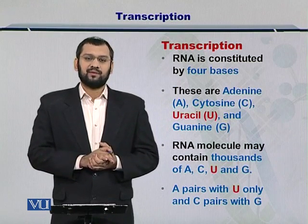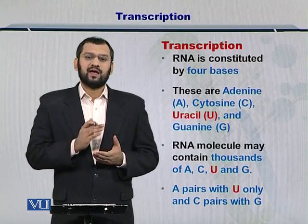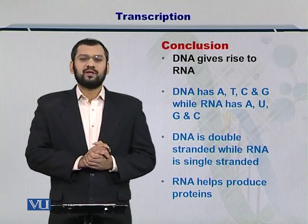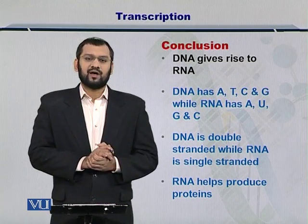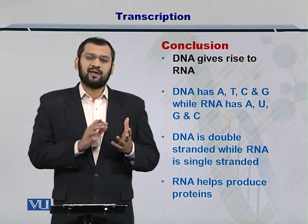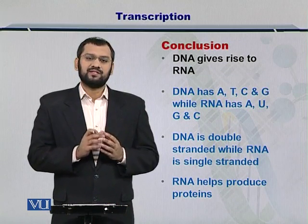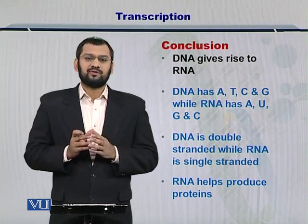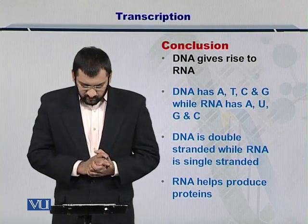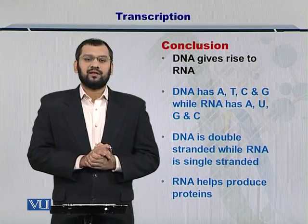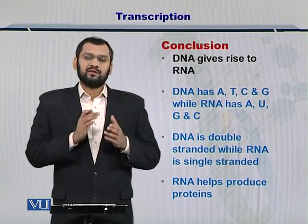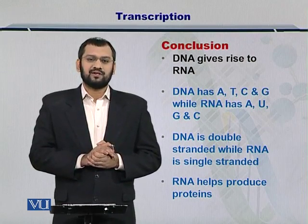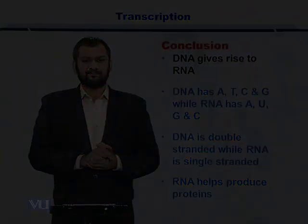These four bases include A, U, G and C. In conclusion, DNA gives rise to an RNA. The DNA had four different types of bases — A, T, C and G — while the RNA has one difference: uracil replaces thymine. Moreover, DNA is double stranded while the RNA is single stranded. These RNA molecules in turn later undergo a process called translation to produce proteins. Thank you.